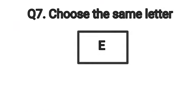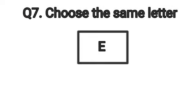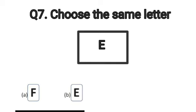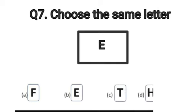Question number 7 is, choose the same letter E. Let's read the options. Option A, F. Option B, E. Option C, T. And option D, H.